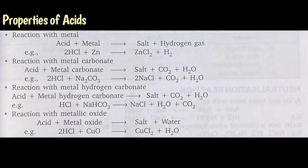Now let us study the chemical properties of acid. First is reaction of acid with metal. When acid reacts with metal, the metal displaces hydrogen from the acid and hydrogen gas is formed, and the metal combines with the remaining part of acid to form a salt. So: acid + metal → salt + hydrogen gas. For example, hydrochloric acid reacting with zinc metal produces zinc chloride and liberates hydrogen gas — zinc displaces hydrogen from hydrochloric acid.